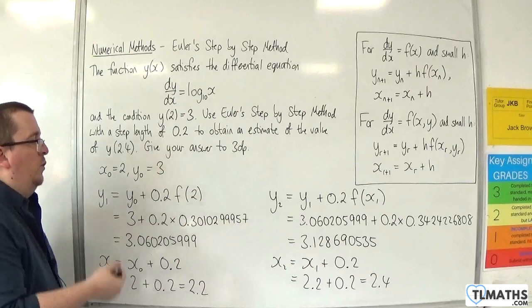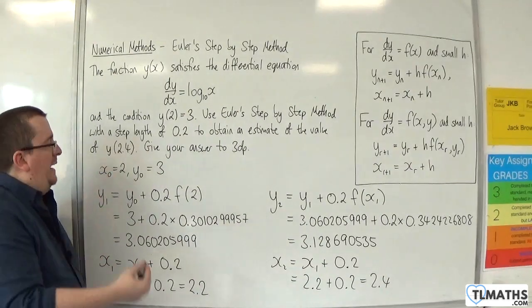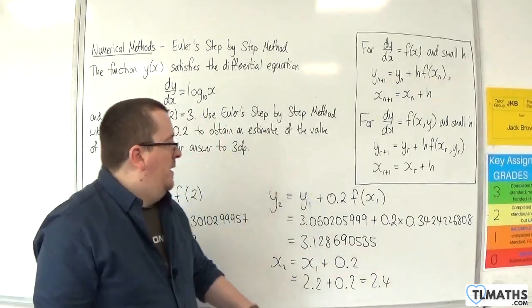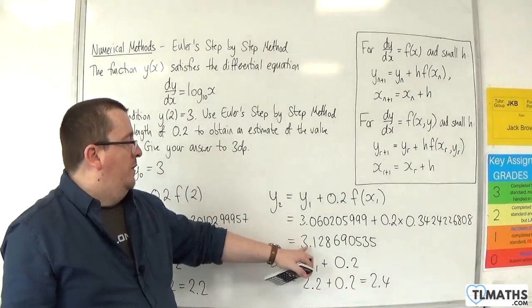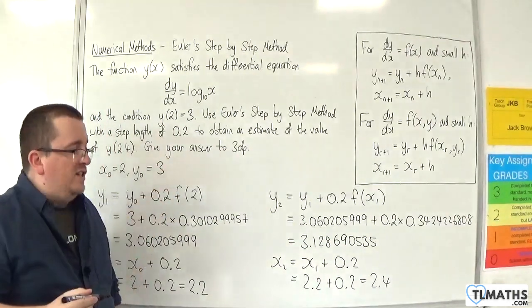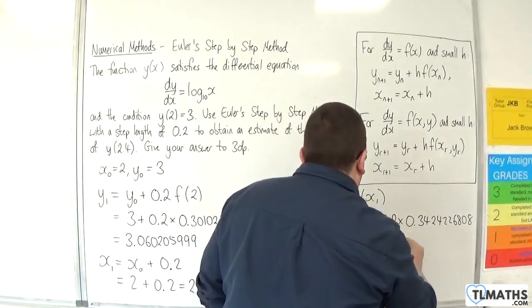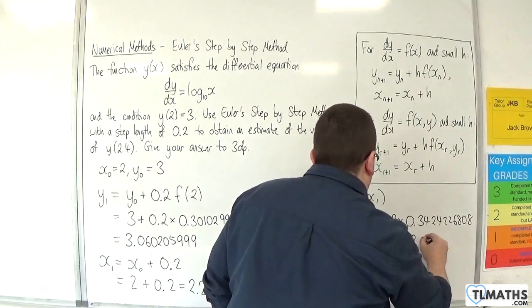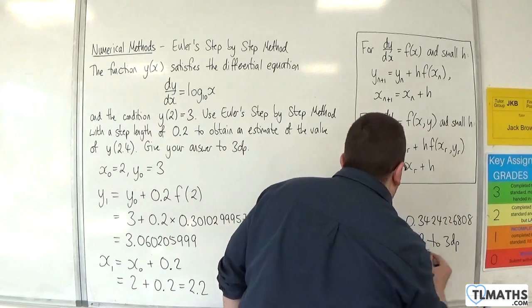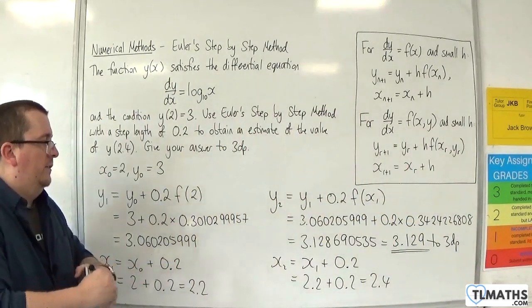We want to find the y value when x was 2.4. If x2 is 2.4, then the corresponding y value that I want is this value here. So we just need to round that to 3 decimal places. And so that would be 3.129 to 3 decimal places. And that is the answer I am looking for.